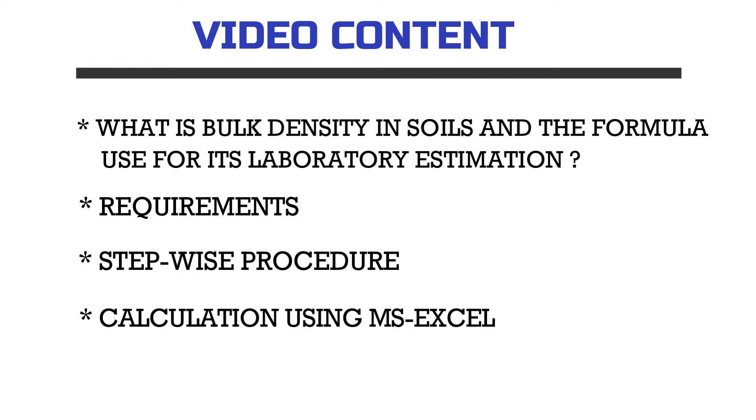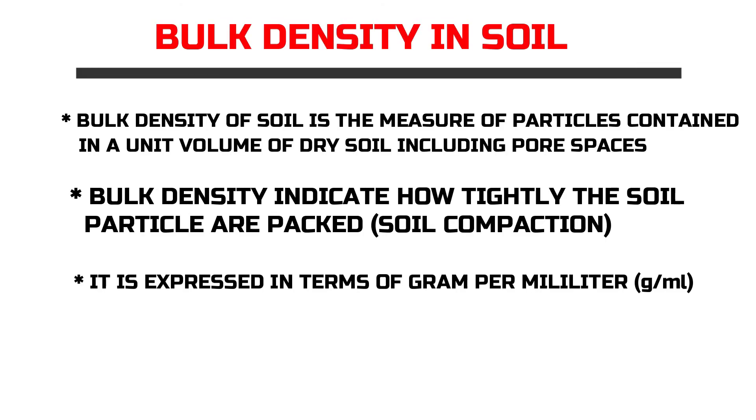To begin with, by definition, the bulk density of soil is the measure of the particles contained in a unit volume of dry soil including the pore spaces. So technically, bulk density indicates how tightly the soil particles are packed, or in one word, it indicates soil compaction. So a compact soil has less pore space, therefore the bulk density is high, whereas a loose soil has more pore space, that's why the bulk density is lower.